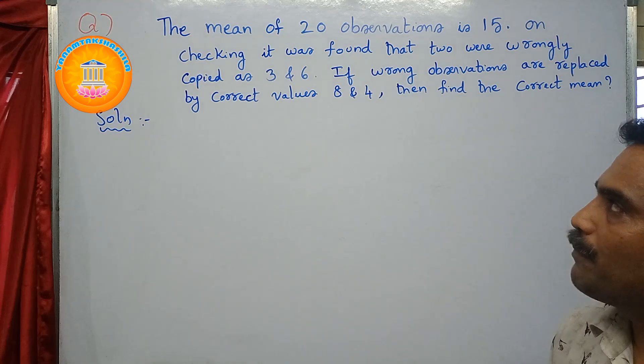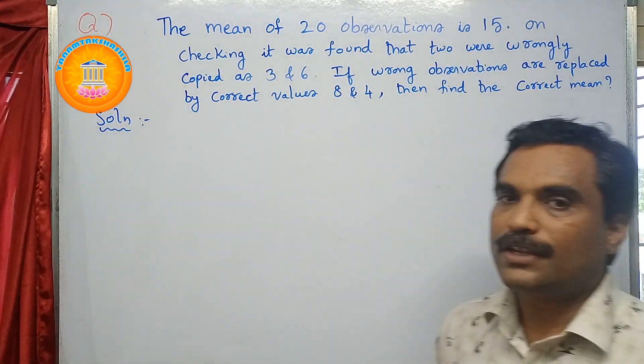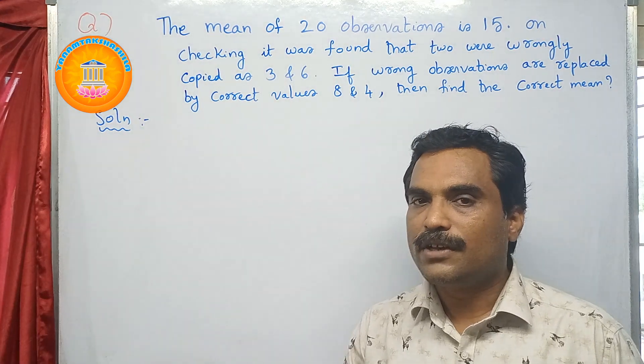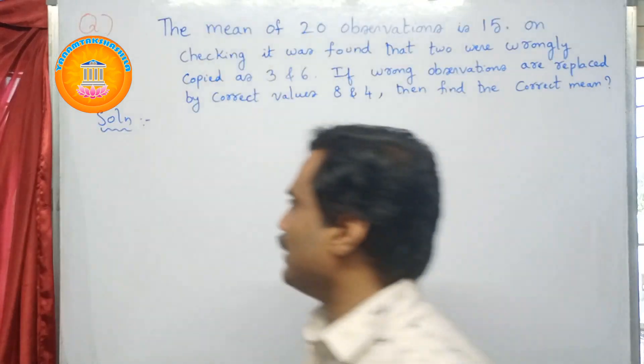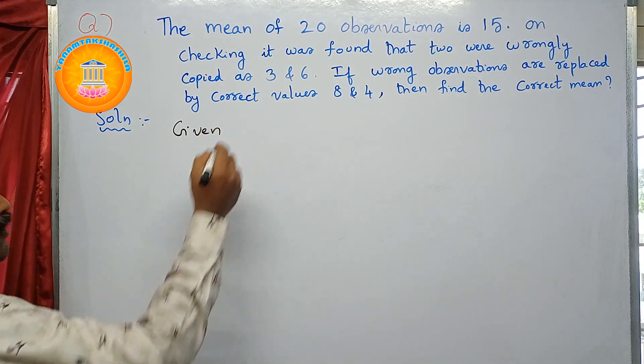So what they have given in the problem? Here they have given the mean of 20 observations is 15. So mean value is given, mean value is 15. So first you have to write given.